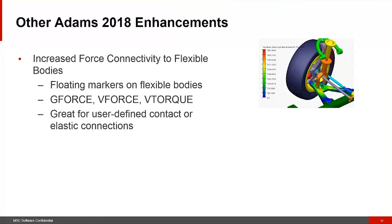We've also made enhancements to flexible body force connectivity — we now allow floating markers on flexible bodies. G-forces, V-forces, and V-torques previously could not be placed directly onto a flexible body and required a dummy part workaround. Now there's no need for those tricks, which is beneficial for user-defined contact functions or elastic connections, for example.